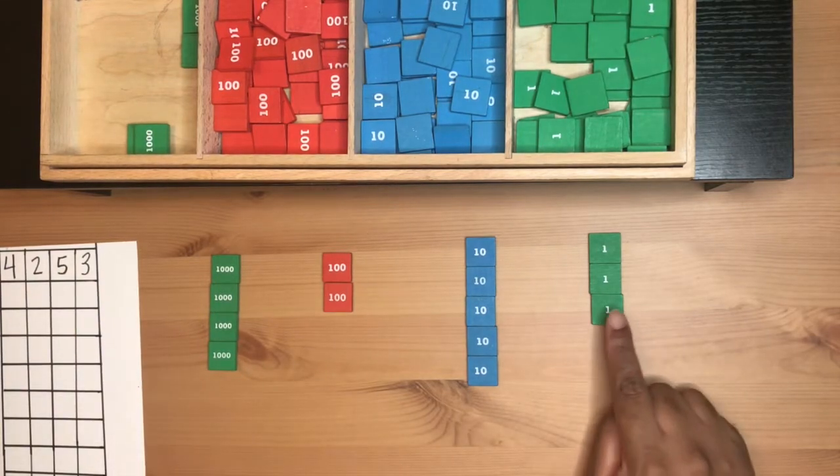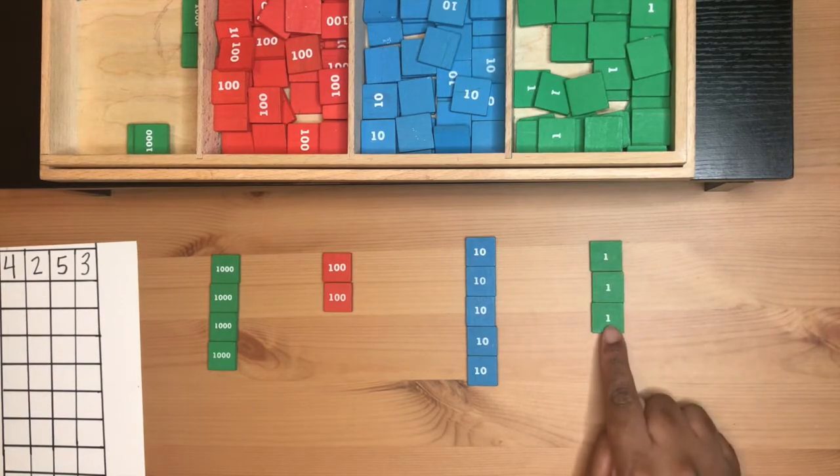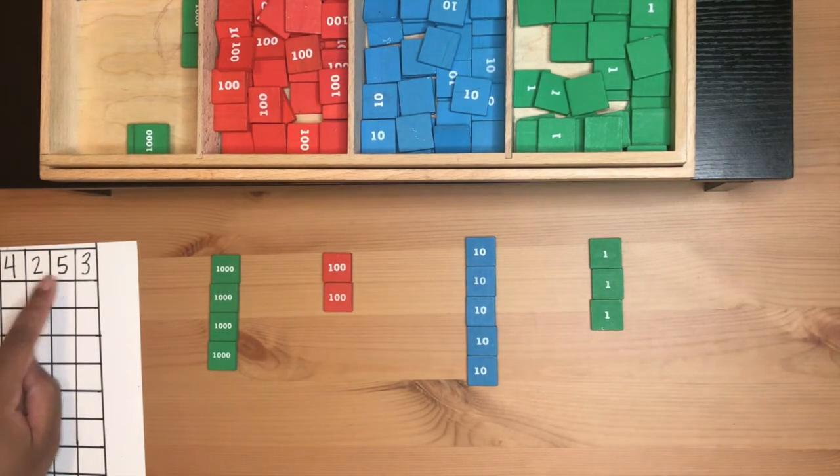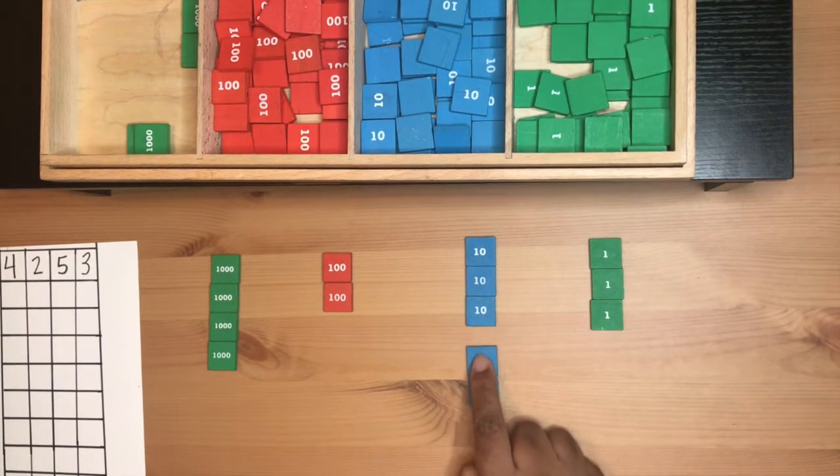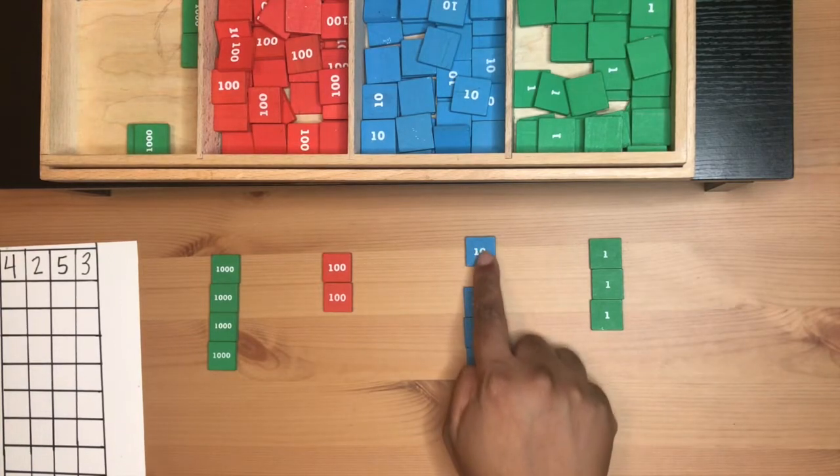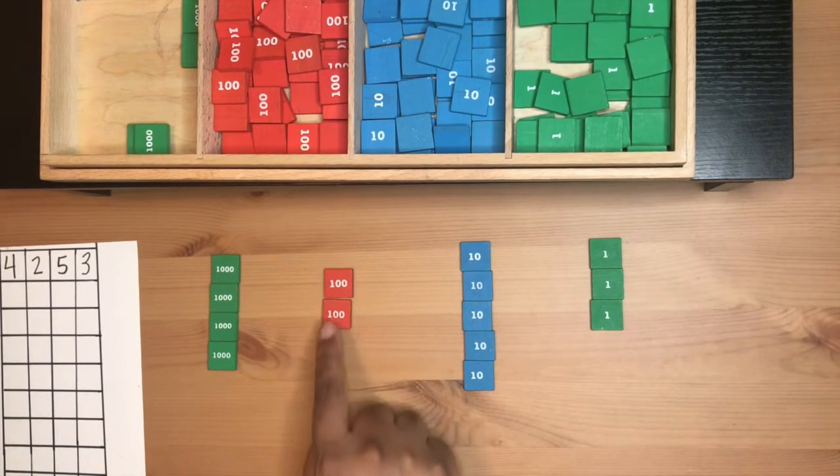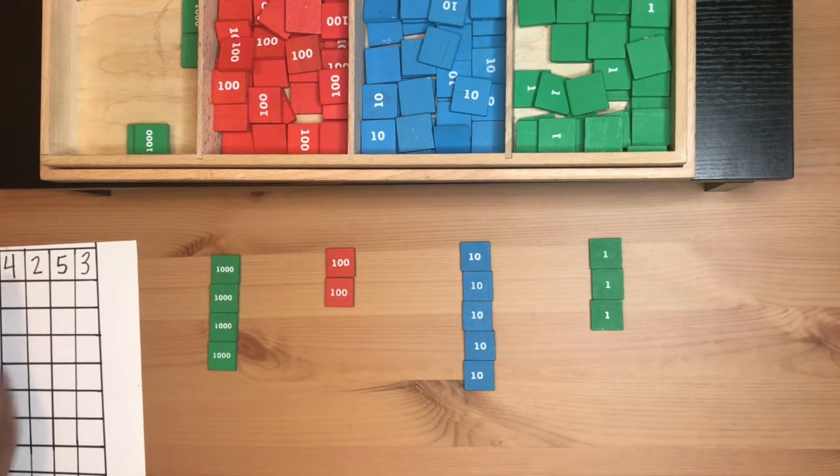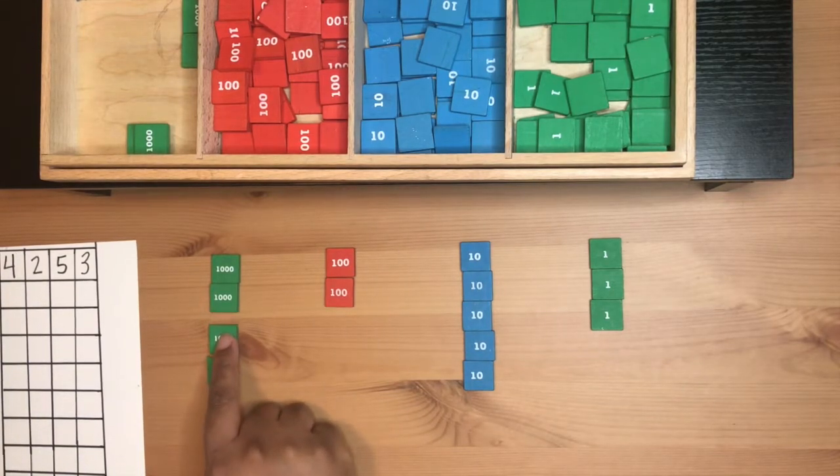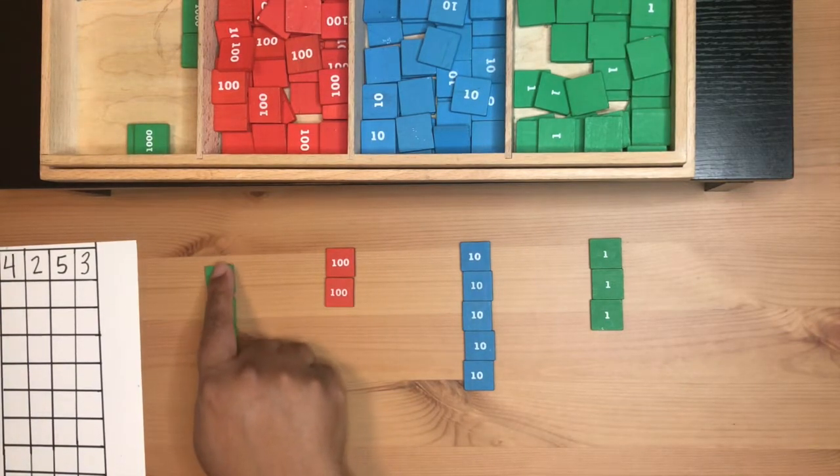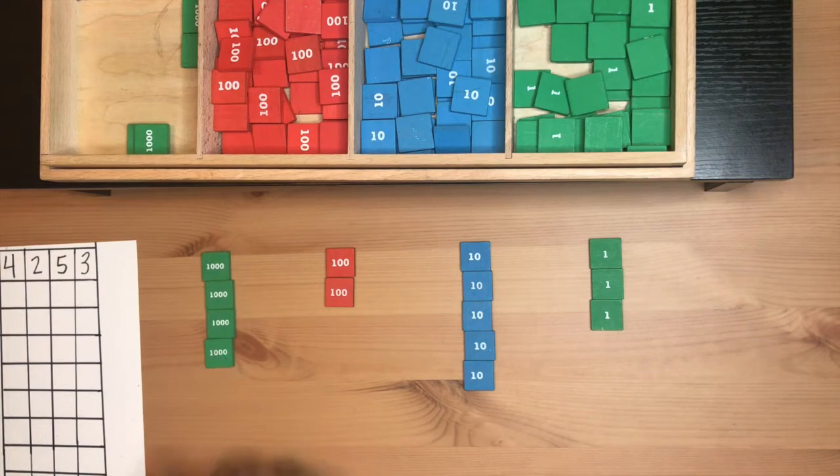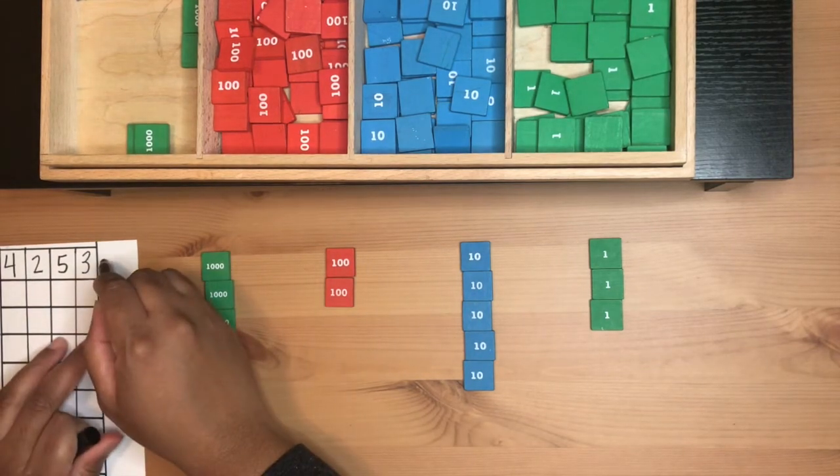It's been verified and I'm going to verify: one unit, two units, three units. Five tens: one ten, two tens, three tens, four tens, five tens. Two hundreds: one hundred, two hundreds. Four thousands: one thousand, two thousand, three thousand, four thousands. It's been verified and I'm going to put a check.